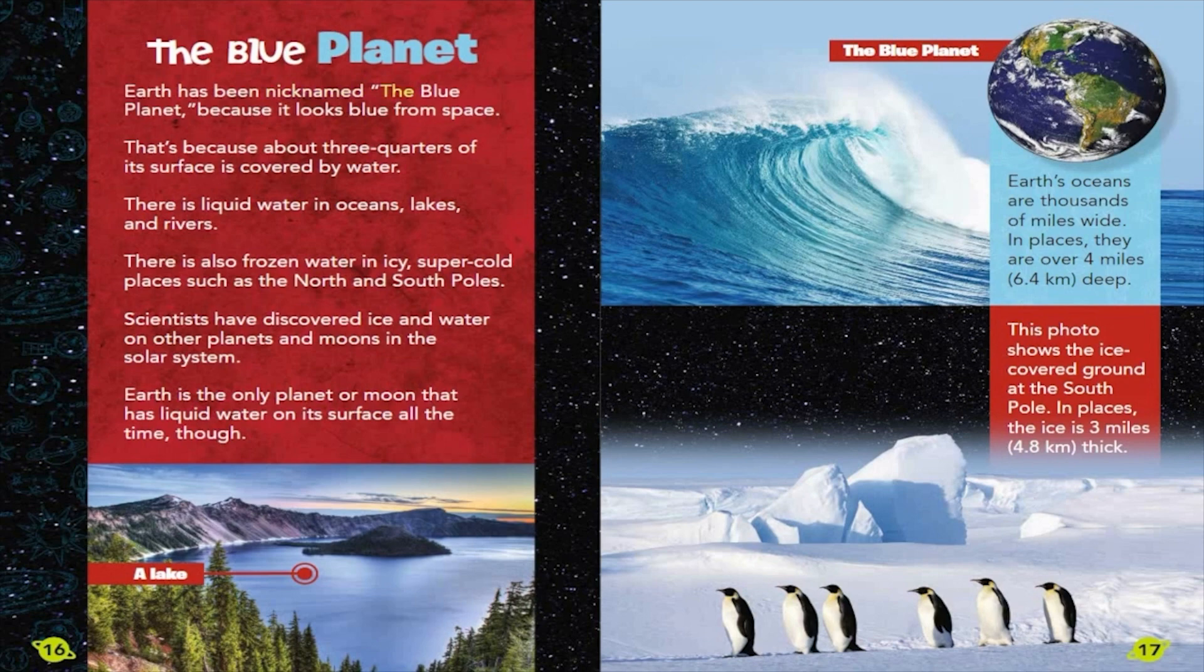Earth has been nicknamed the Blue Planet because it looks blue from space. That's because about three-quarters of its surface is covered by water. There is liquid water in oceans, lakes, and rivers. There is also frozen water in icy, super-cold places, such as the North and South Poles.